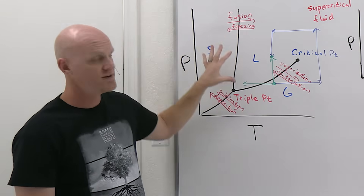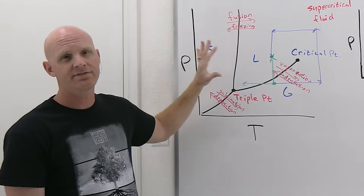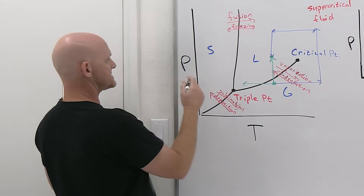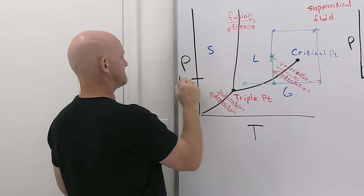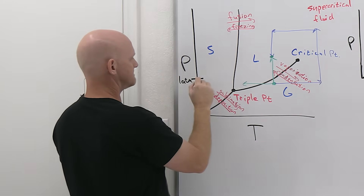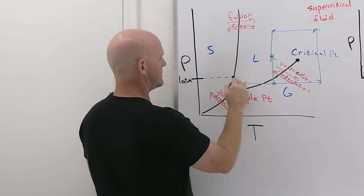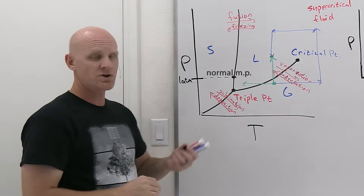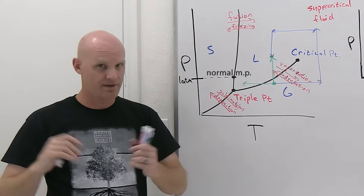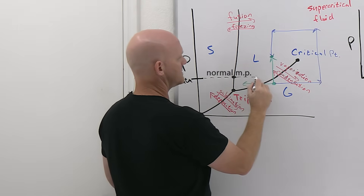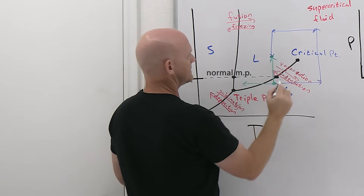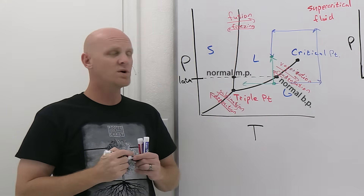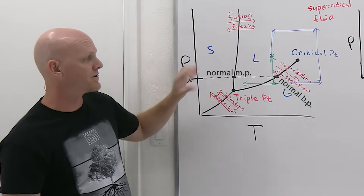This is your typical phase diagram — most substances look like this. One other thing to identify is where one atmosphere lies. At that pressure, the point on the solid-liquid line of equilibrium is called the normal melting point — 'normal' referring to one atmosphere of pressure. And the point on the liquid-gas line at one atmosphere is called the normal boiling point.